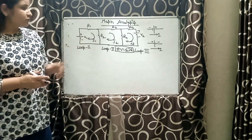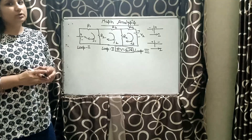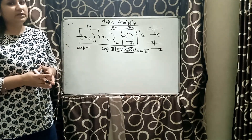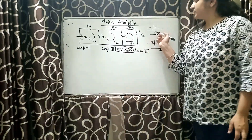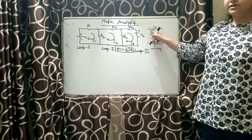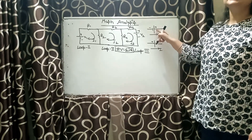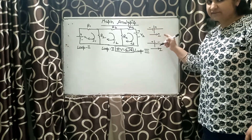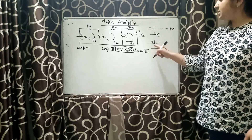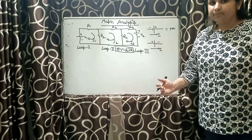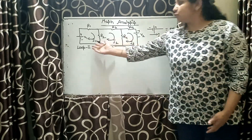In loop number one we have two resistances R1 and R2, and one voltage source V1. Now here comes a key point: how to take the polarity of the voltage source as positive or negative. As per the direction of current, if the current is going from negative to positive, it is increasing — the last symbol is positive, so the voltage source is taken as positive. On the other hand, if it is going from positive to negative, it is reducing — the last symbol is negative, so it will be taken as negative.